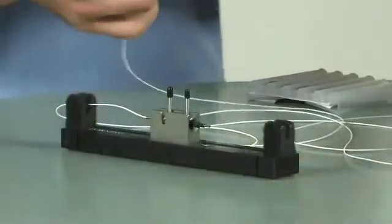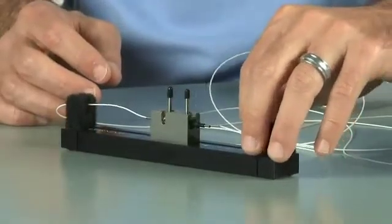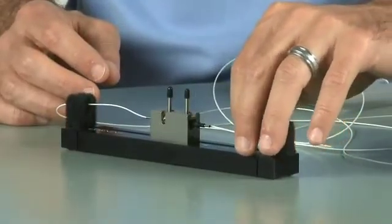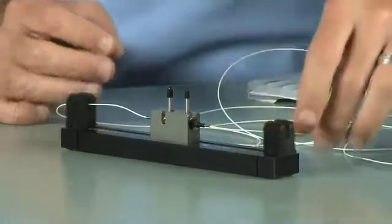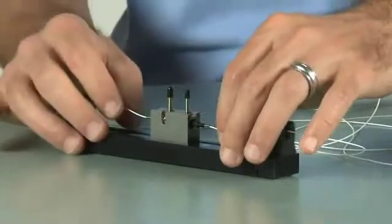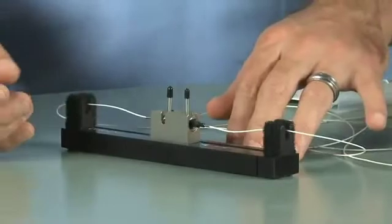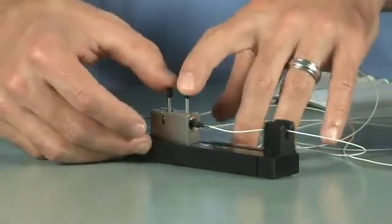Once you remove your cleaved fiber, you're ready to go into the opposite side of the splice. Insert the fiber all the way until you feel it stop and center. At which point you activate the splice by simply lowering the handles.